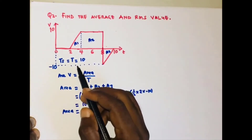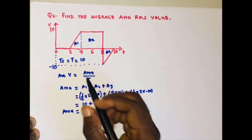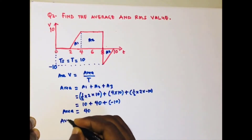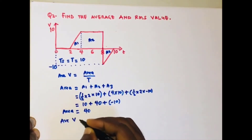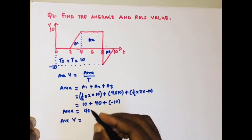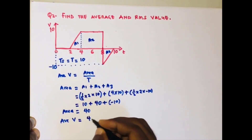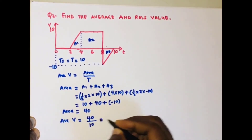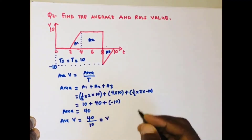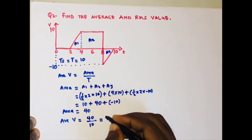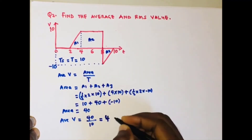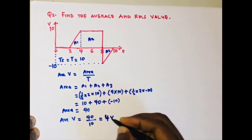Since the period is 10, the average value equals 40 divided by 10, which is 4 volts.